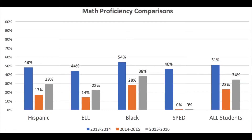The math proficiency comparisons are very similar to the ELA comparisons. Students with disabilities again showed 0% growth between 2014-15 and 2015-16. All other subgroups are showing growth except for special education students. ELL students are still performing lower than Black and Hispanic students — their proficiency levels are 7% lower than Hispanic students and 16% lower than Black students.